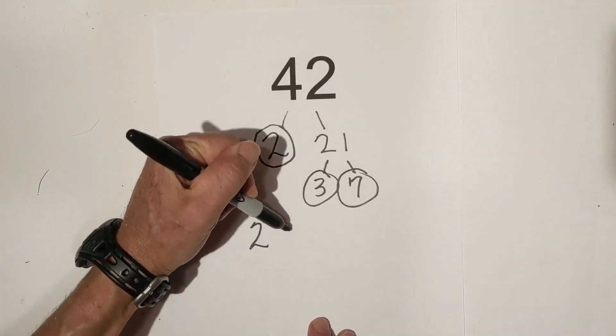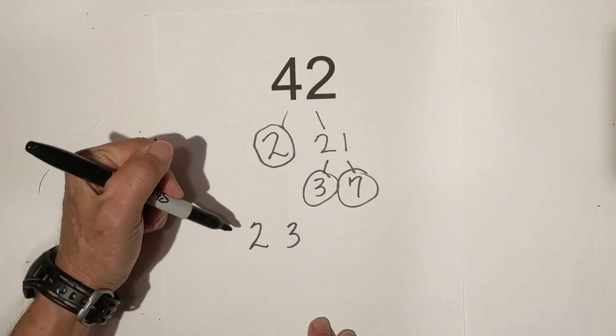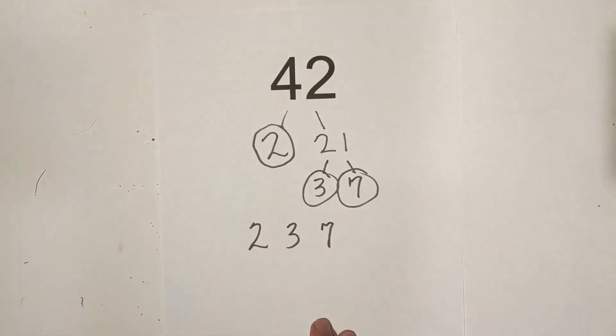And so now let's rewrite it. We're going to start with the smallest: two, then three, then seven. I hope that helps in setting up a factor tree for prime factorization. Thanks for watching, and remember: kindness multiplies kindness. Be kind to someone today.